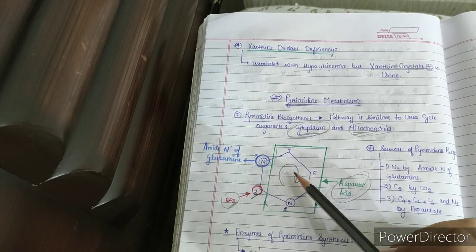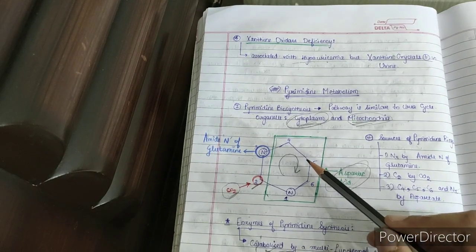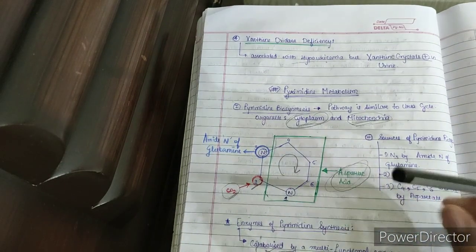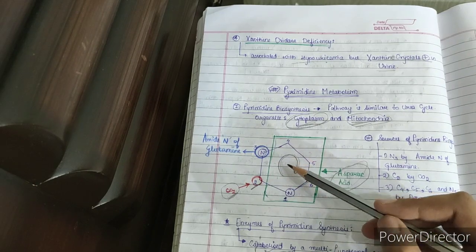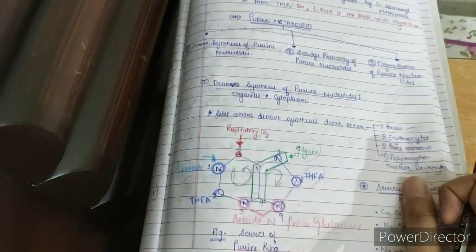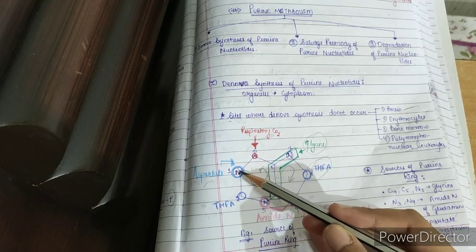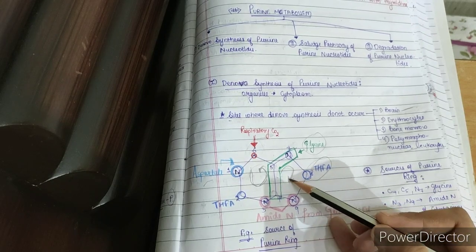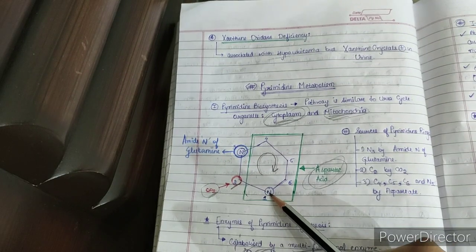Just like in purine synthesis, where I discussed which atoms are derived from which substrates, I'll do the same here for the pyrimidine ring. To name a pyrimidine ring, we start from the nitrogen at the bottom position and move in a clockwise direction — unlike the purine ring where you move anti-clockwise for the first ring and clockwise for the second.